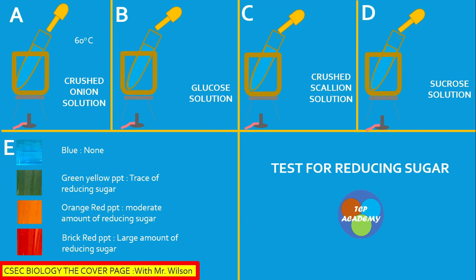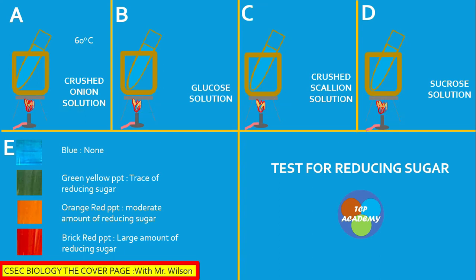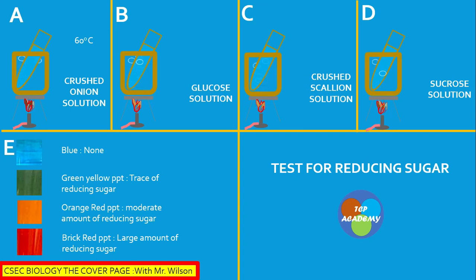We are going to add Benedict solution to the mixture in the container, then heat it to a boil. Temperature must go above 60 degrees Celsius. Pay close attention as we expect the color in the boiling tube to change as the experiment progresses. You can see the water boiling outside the test tube in the water bath.